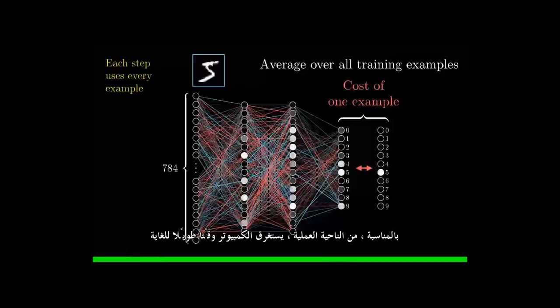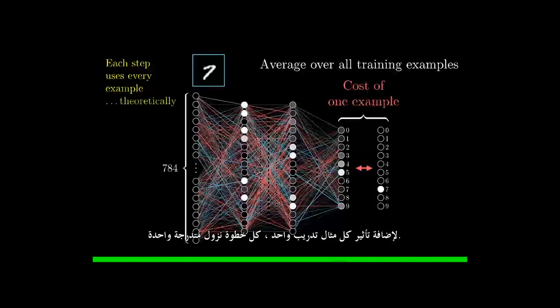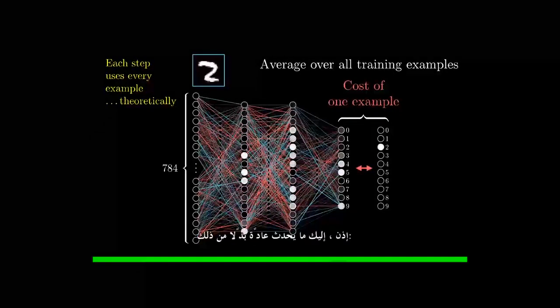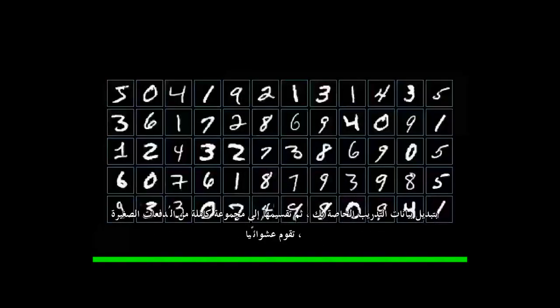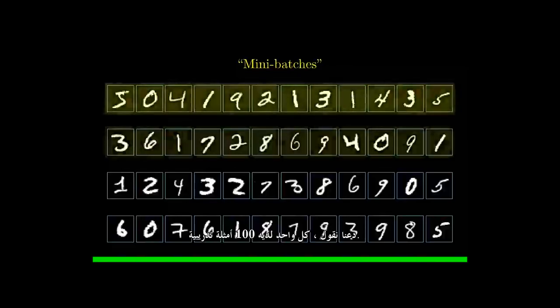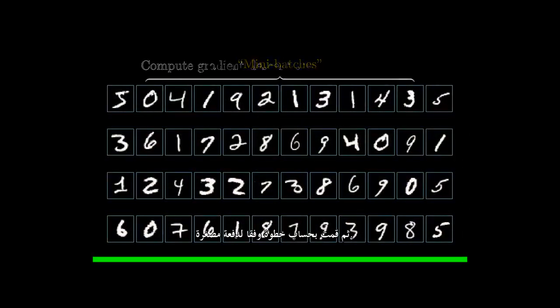By the way, in practice, it takes computers an extremely long time to add up the influence of every single training example, every single gradient descent step. So here's what's commonly done instead. You randomly shuffle your training data, and then divide it into a whole bunch of mini-batches, let's say each one having 100 training examples. Then, you compute a step according to the mini-batch.